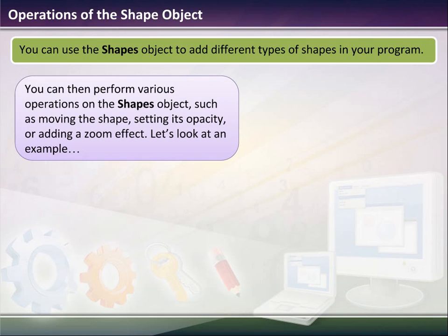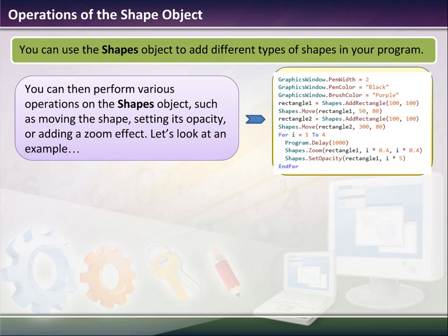Now, you can use shapes object to add different shapes into your program. You can perform various operations of the shape object such as moving the shape, setting its opacity, adding a zoom effect. So here's a little program here.